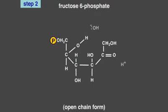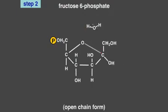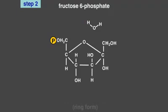The same enzyme, phosphoglucose isomerase, catalyzes the formation of fructose-6-phosphate into its ring form.